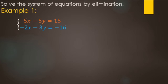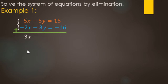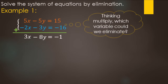Let's solve this system by elimination. We start by adding straight down: 5x minus 2x makes 3x, negative 5y minus 3y makes negative 8y, and 15 minus 16 is negative 1. Notice none of the variables were eliminated, so we need to think about multiplication. Looking at the x's, we have a positive and a negative — if we could get them to be a positive 10 and a negative 10, they would be eliminated when added.